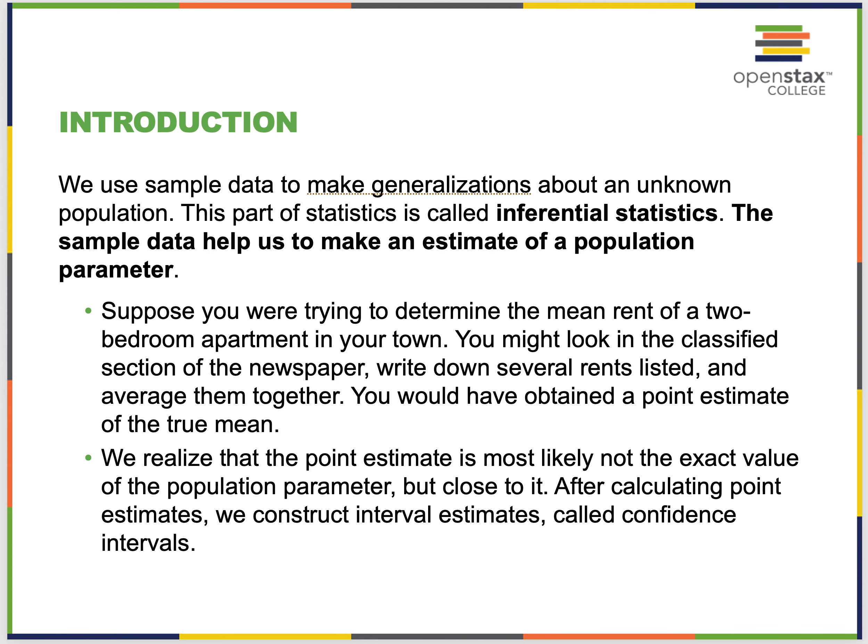If we keep taking the mean of a sample of 10 from a population of a million, every time we take a sample of 10, we're going to get a different mean. That sample mean has its own distribution — we already talked about that with the central limit theorem. Suppose you're trying to determine the mean rent of a two-bedroom apartment. You might look in a classified ad and average several rents. That would be a point estimate of the true mean, which is most likely not the exact value of the population parameter, but close to it. What we want to know is how close.